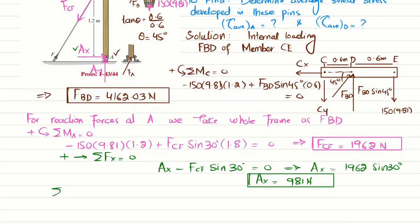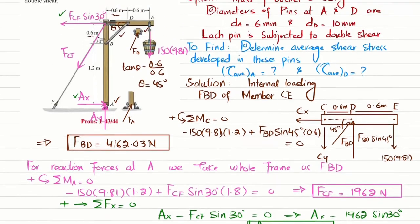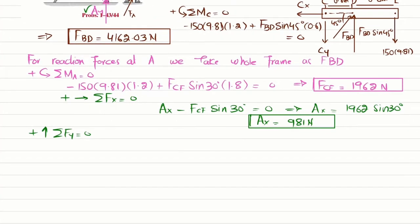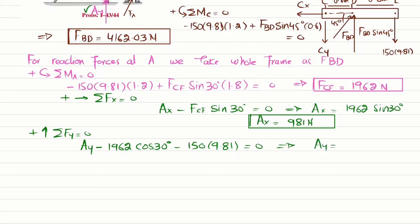Now find A_y using sum of all forces along the y-direction equals zero, taking upward as positive: A_y − F_CF × cos(30°) − 150 × 9.81 = 0. Substituting F_CF = 1962 N gives A_y = 1962 × cos(30°) + 150 × 9.81 = 3170.64 N.